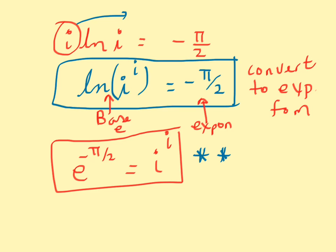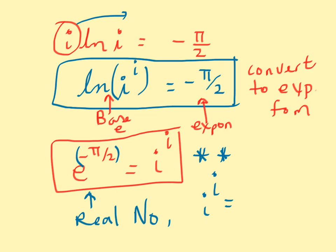Now we have an equation that tells us what i raised to the exponent i is. And i raised to the exponent i is simply a real number — one that can be evaluated on your calculator using e to the exponent negative π/2. That means i to the i is equal to positive 0.2078, which we can round to approximately 0.208.